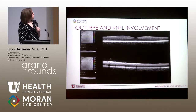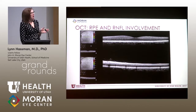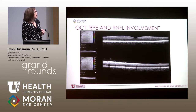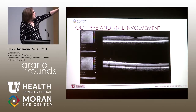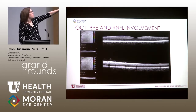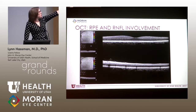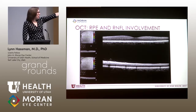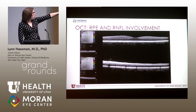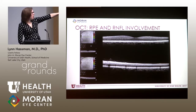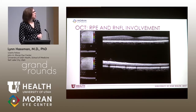In the left eye we have similar but less dramatic changes. The central foveal architecture is normal. Looking superiorly in the lower picture, you can see some vitreous cell and RNFL hyperreflectivity.